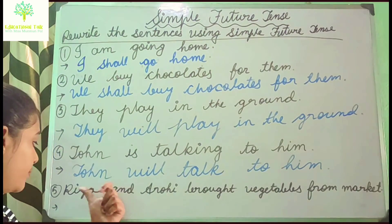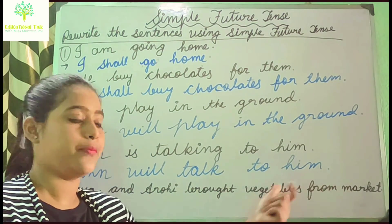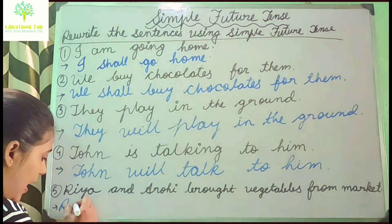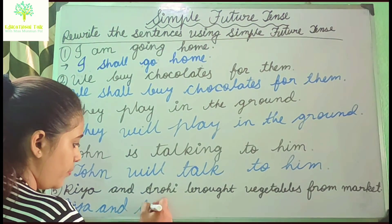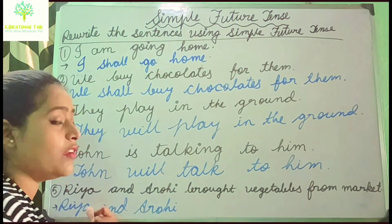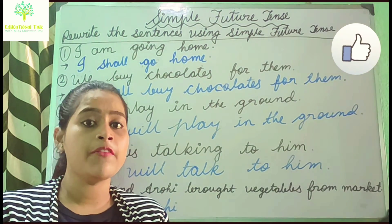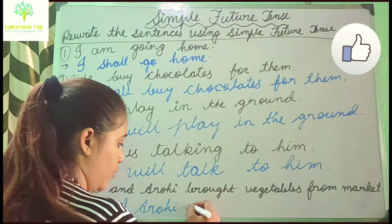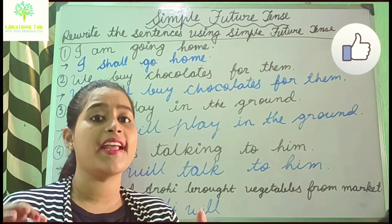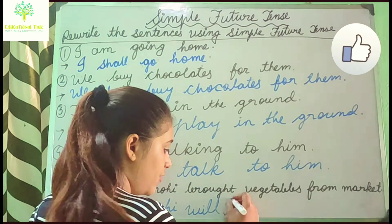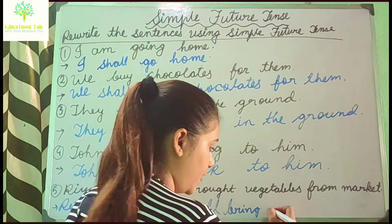Next one: 'Ria and Aruvi brought vegetables from market.' The subject is 'Ria and Aruvi', so the helping verb will be 'will'. The V1 form of 'brought' is 'bring'. So: 'Ria and Aruvi will bring vegetables from market.'